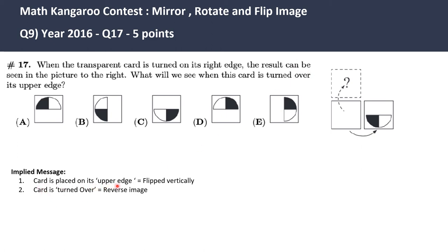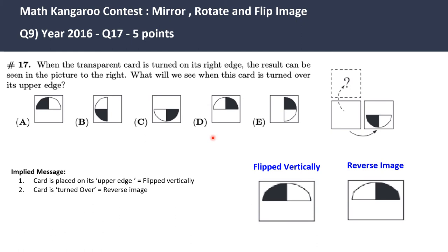Card is turned over. That means it's a reverse image. If it's a reverse image, the black part of this card should be on the right hand side because this is on the left hand side. And if I see that, that is available only for option D. This is when I flip vertically and place it here. If I reverse, that is turn over this card, it looks like this, which is option D. So my answer is option D.